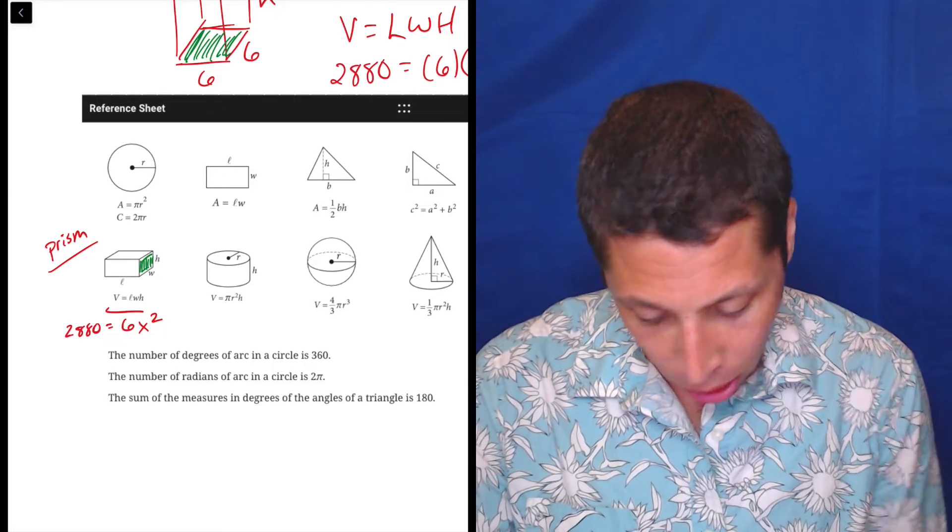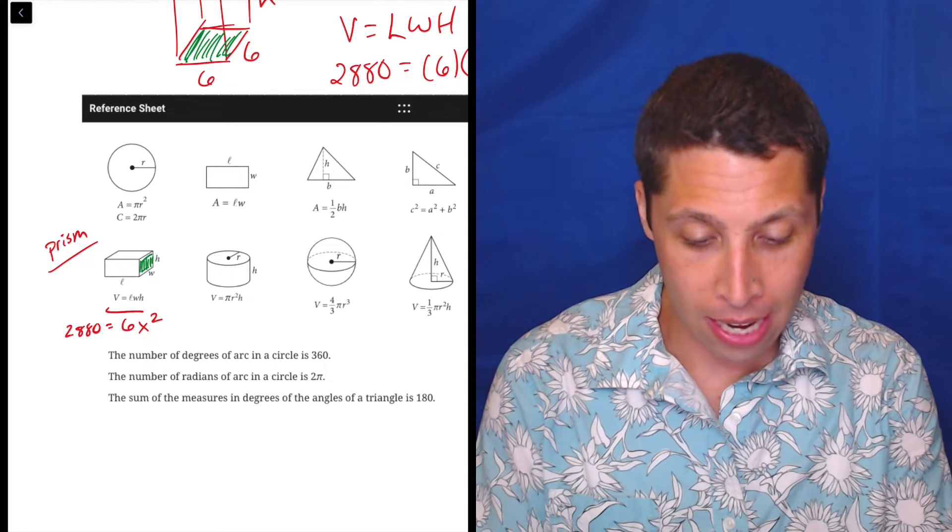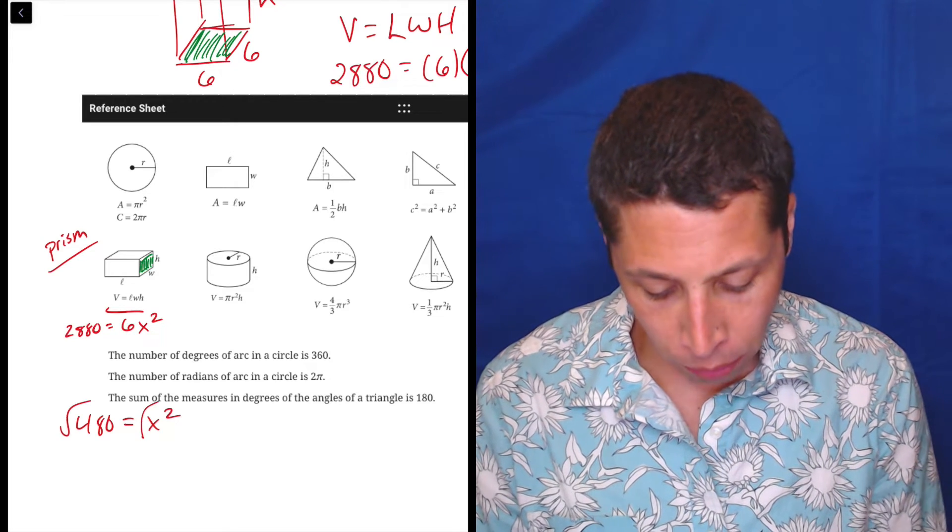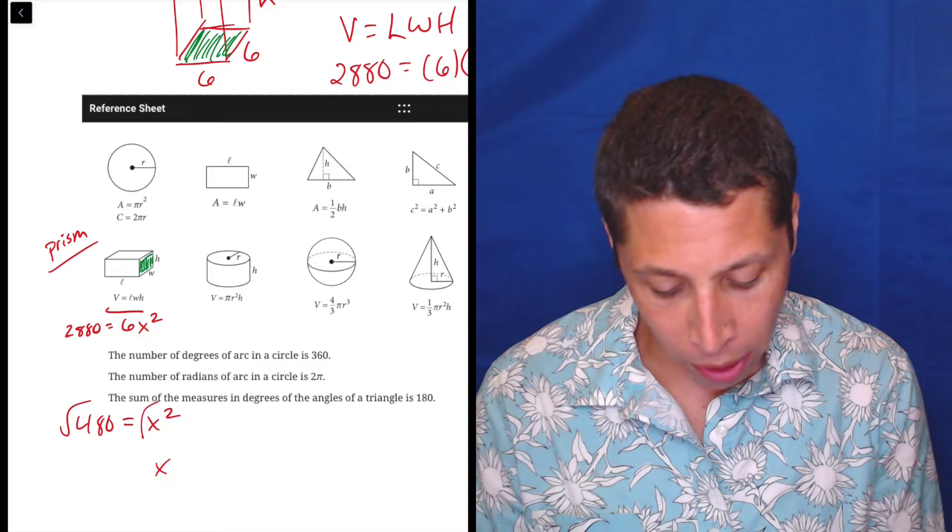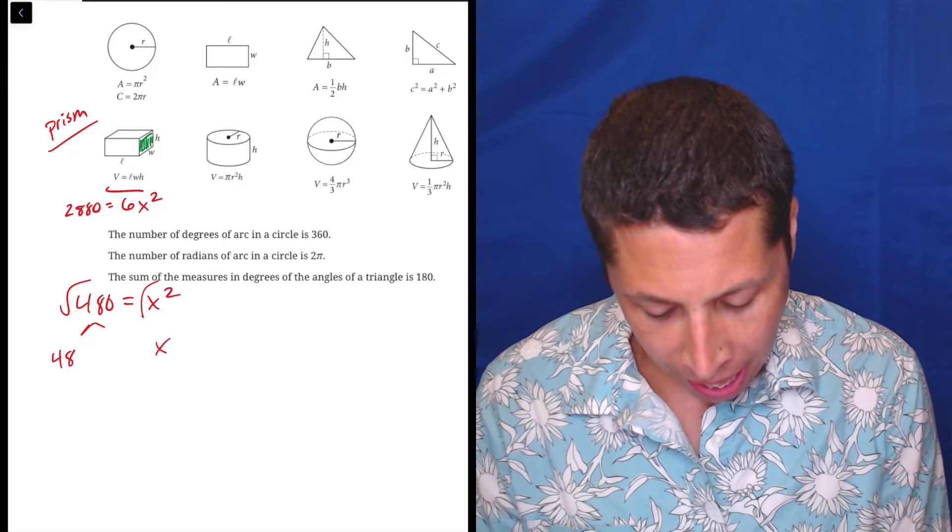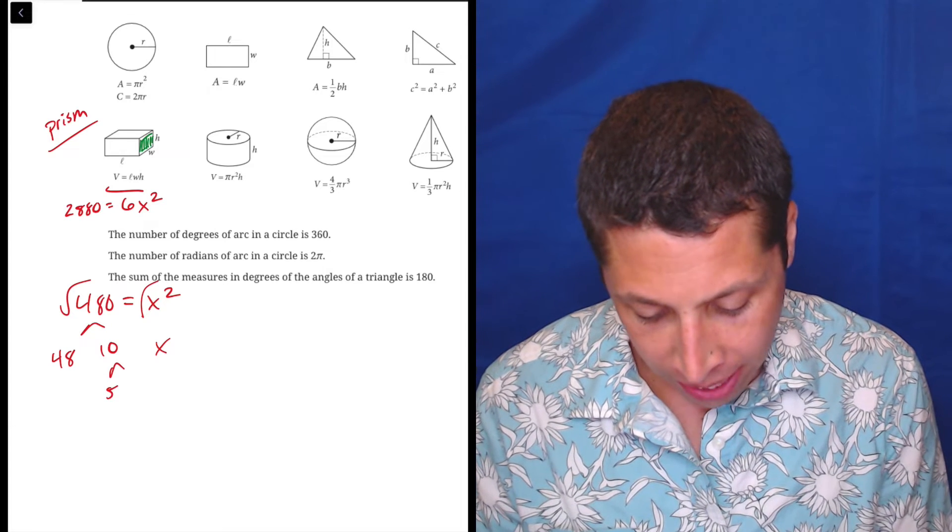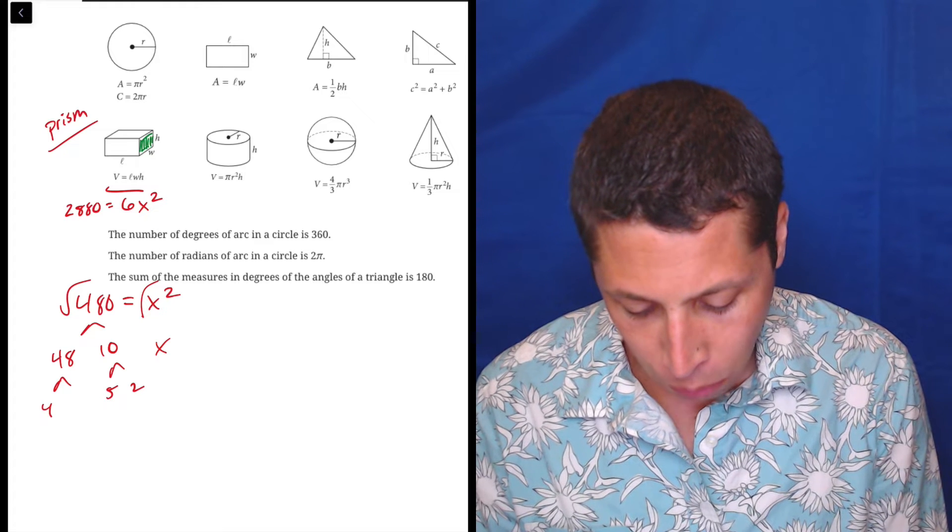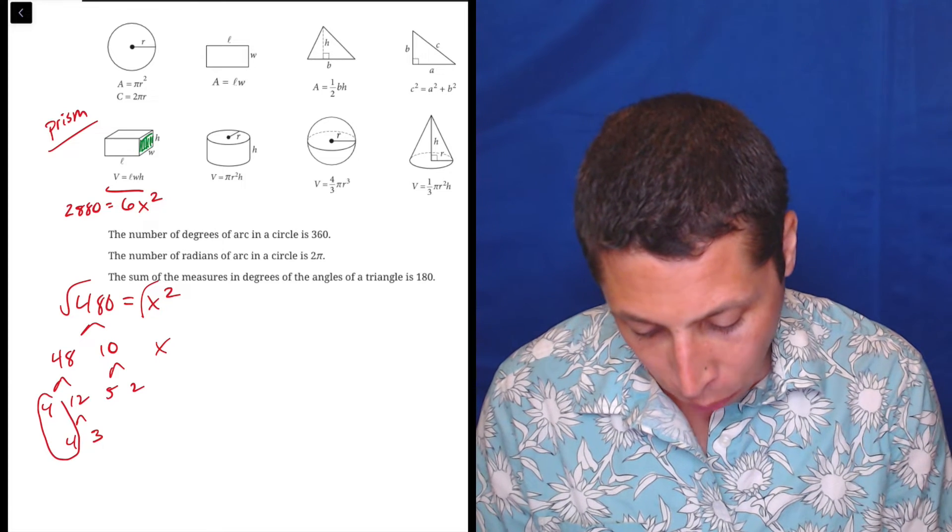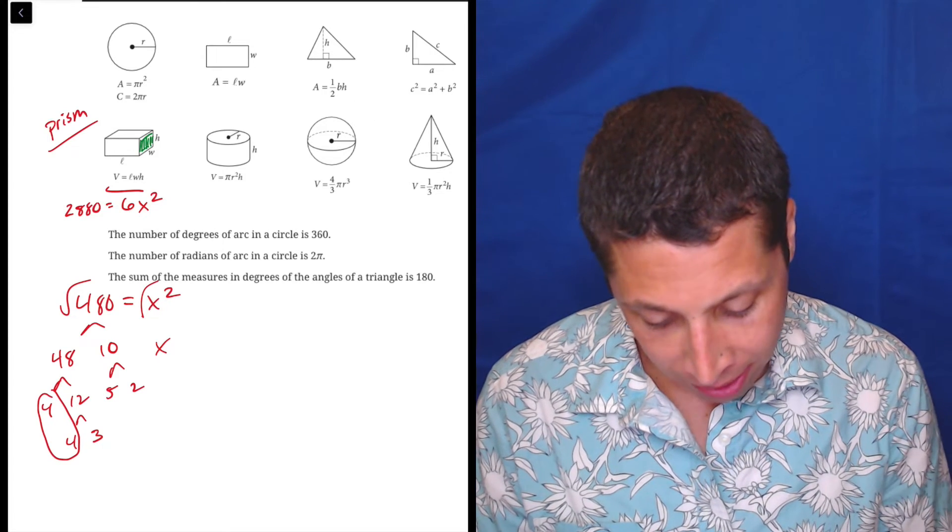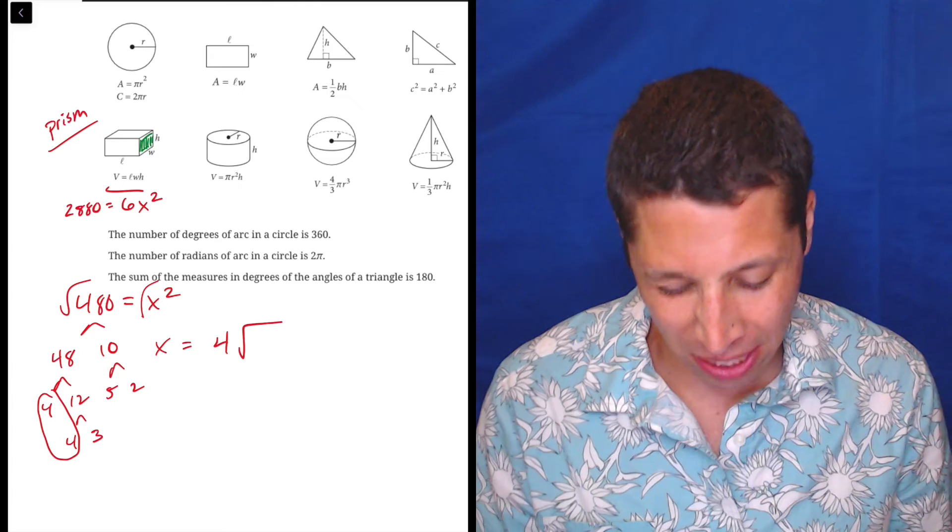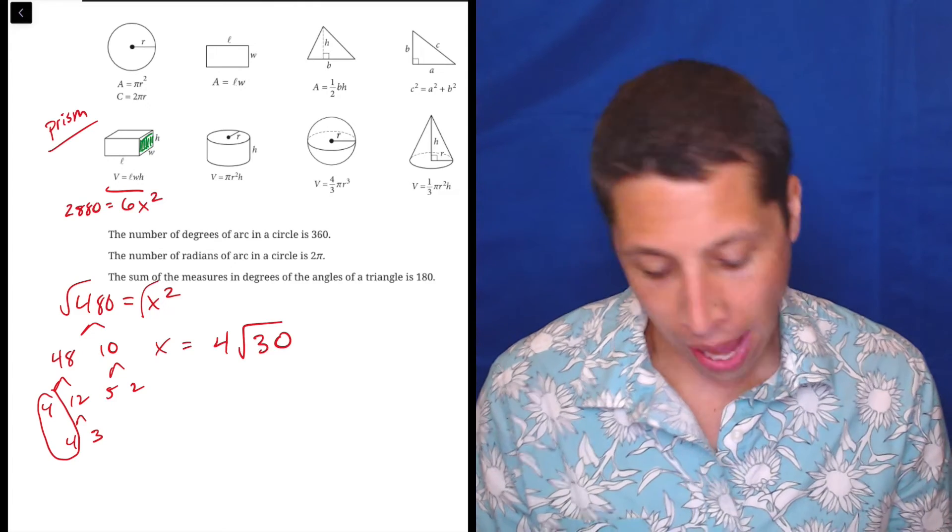So now we can just do the math slightly differently. We would divide by 6. So 2880 divided by 6 is 480. That's equal to x squared. So we take the square root of both sides to get x. So the square root of 480, let's do this the long way. Let's break this down. So I see 48 and 10. 10 is 5 and 2. 48 is 4 and 12. 12 is 4 and 3. So we got two fours that can come out. So that's x being equal to 4. And we got to leave everything else behind. So that's 3 times 5 is 15 times 2 is 30. So x is 4 root 30. That's an answer.